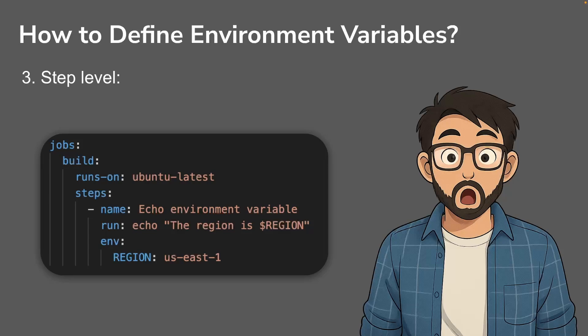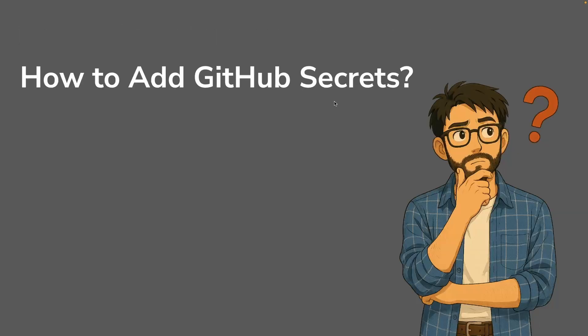The third level is the step level, where you define environment variables inside a particular step. This environment variable will be accessible only to that step — even other steps within the same job cannot access it. Use environment variables to make your workflow cleaner, especially when a value is used multiple times.